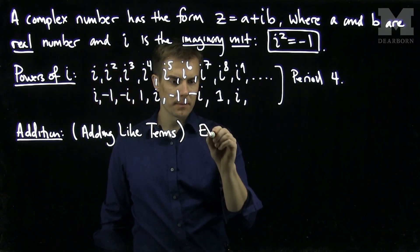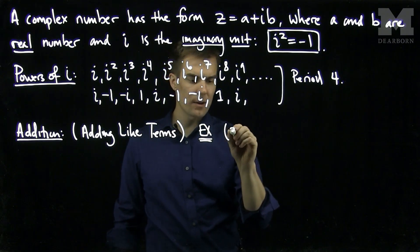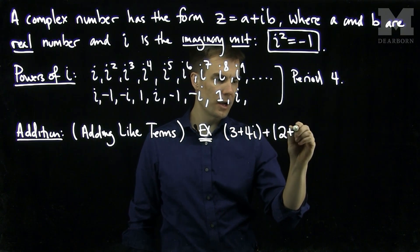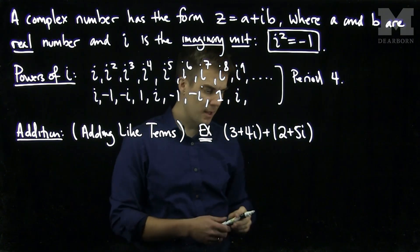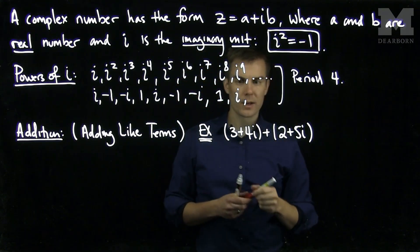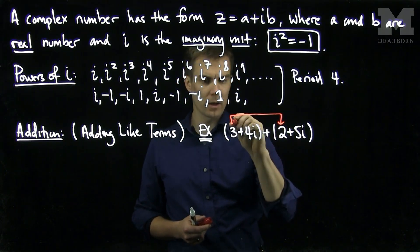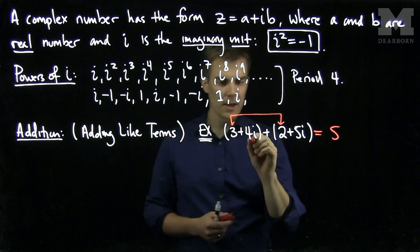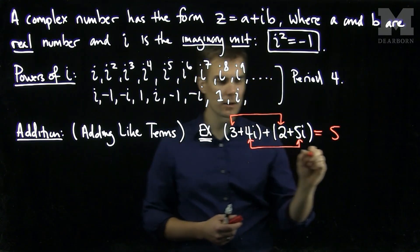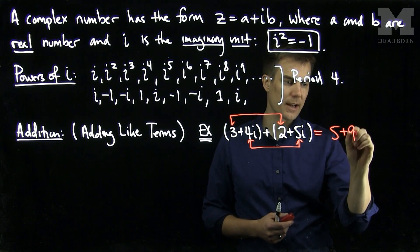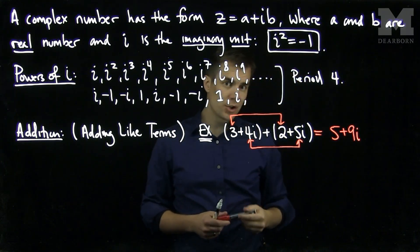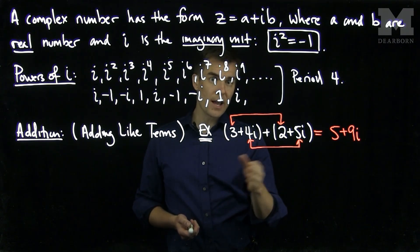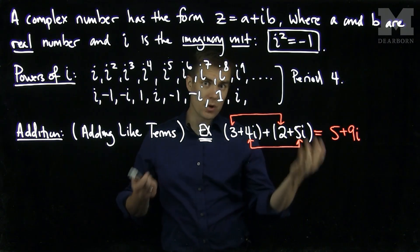So let's see an example of this. For example, we could add 3 plus 4i to 2 plus 5i. And now I will simply add like terms. 2 and 3 are like terms, so I will add those together and get 5. And 4i and 5i are like terms, and I will add them together and get 9i. So addition of complex numbers is as you would expect it to be. You add the terms with the i, and you add the terms without the i, and you combine the result.